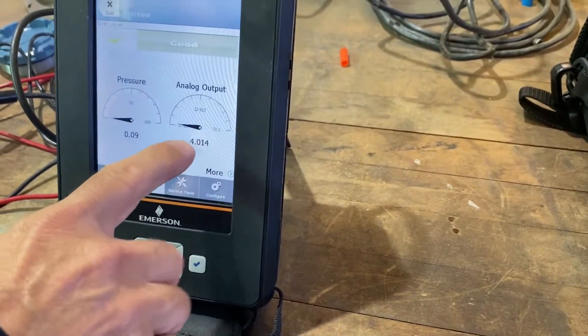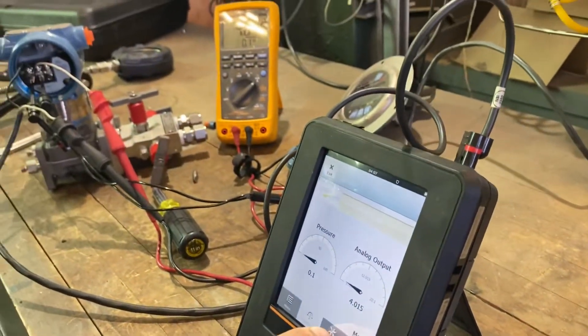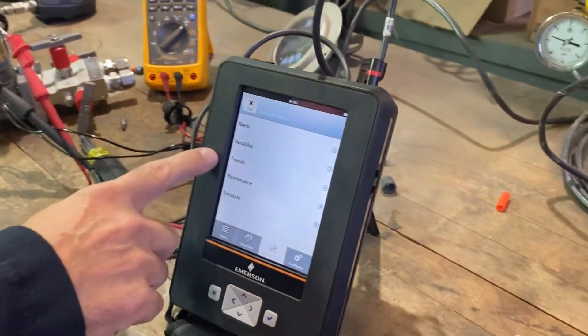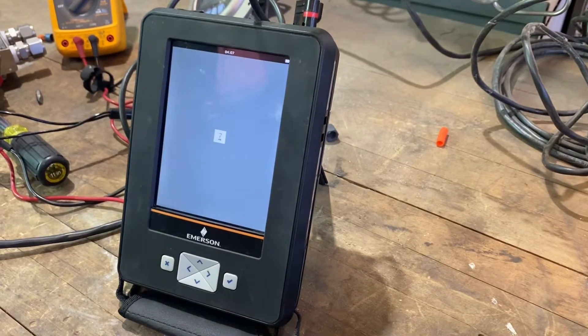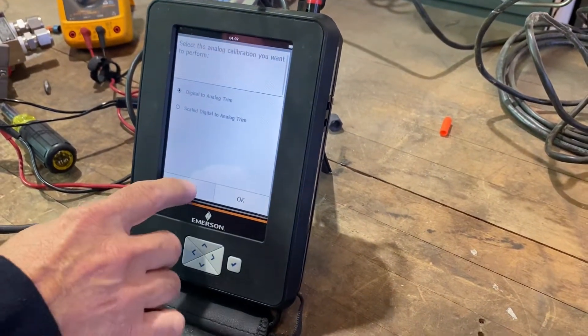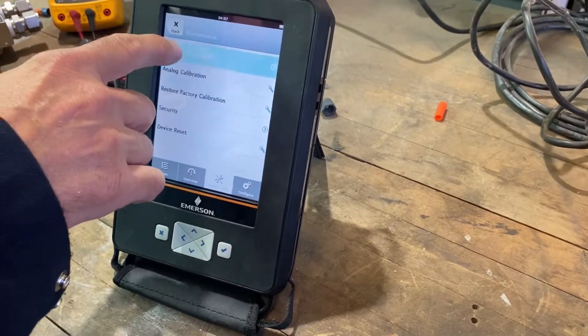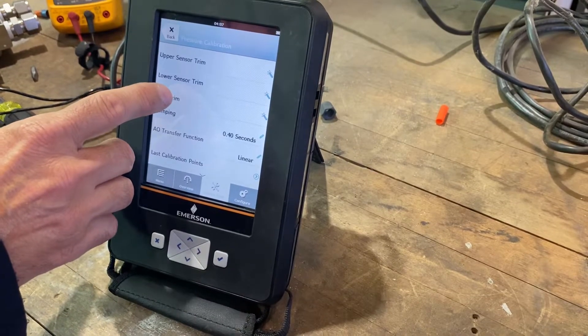So, it's connected on. It's reading what the meter is reading. Then, you want to go to service tools. Maintenance. Analog calibration. Actually, pressure calibration. Zero trim. Okay.